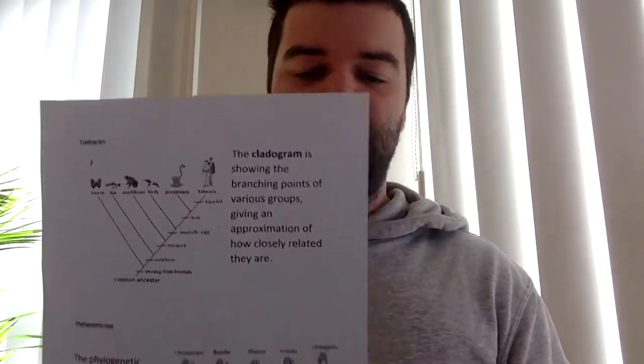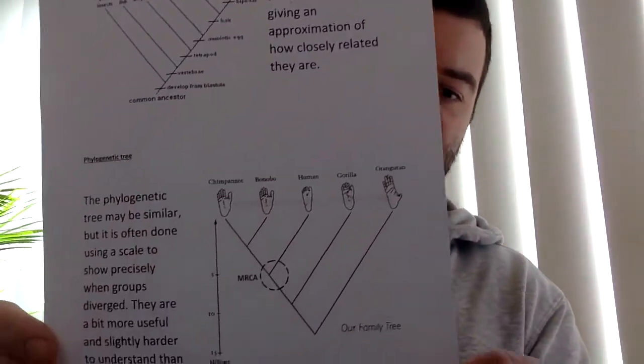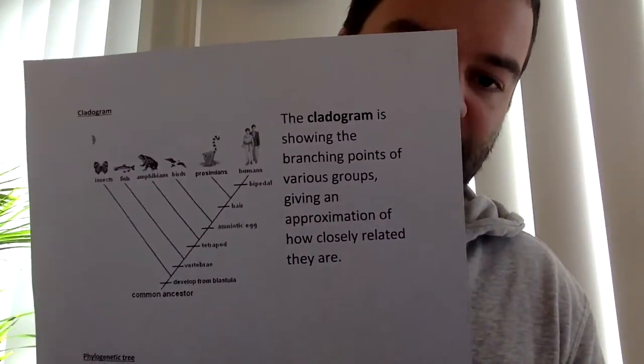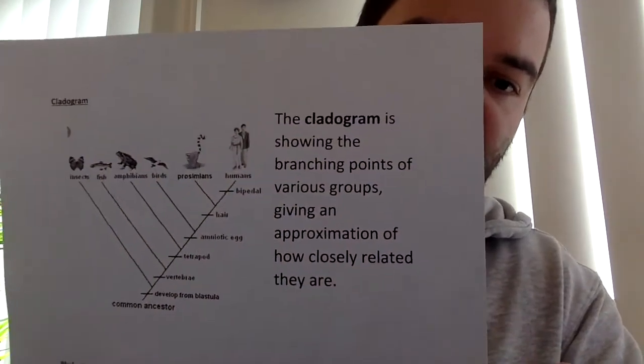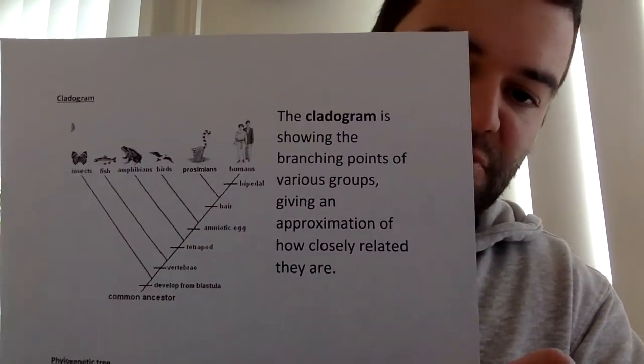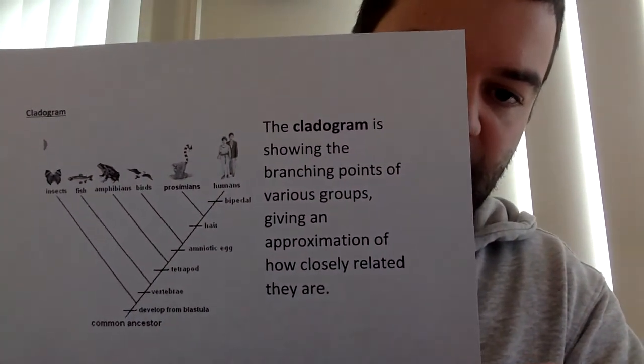This is just another lesson to overview the idea of cladograms, phylogenetic trees, and the concepts of convergent and divergent evolution. Cladograms and phylogenetic trees are both diagrams used to show relatedness between species. We'll start off on the cladogram, which is probably the simpler of the two diagrams.